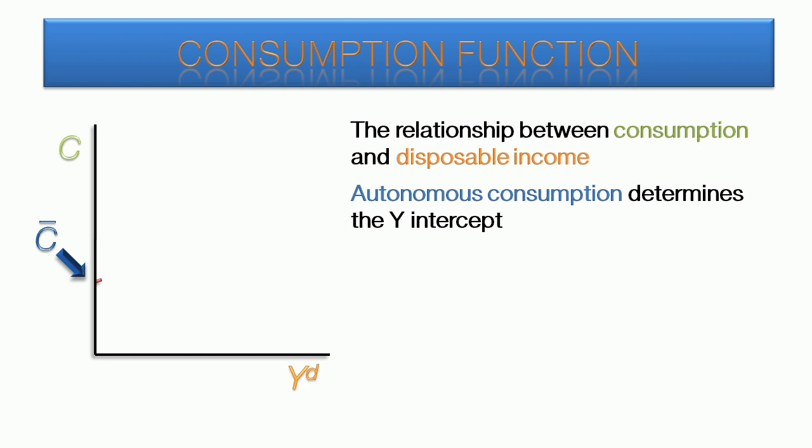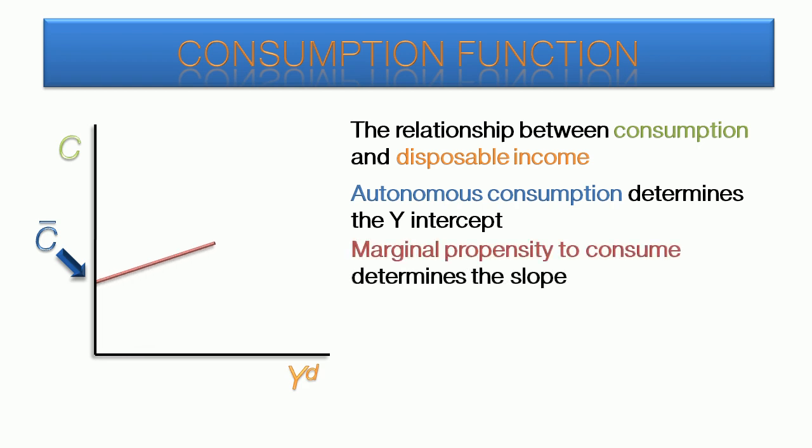As you recall, this is the level of consumption when disposable income is 0. Marginal propensity to consume determines the slope of this curve. As disposable income increases from left to right, it is modified by the MPC. A high MPC of 0.9, for example, would lead to a steep curve. A lower MPC would mean a more gradual slope.